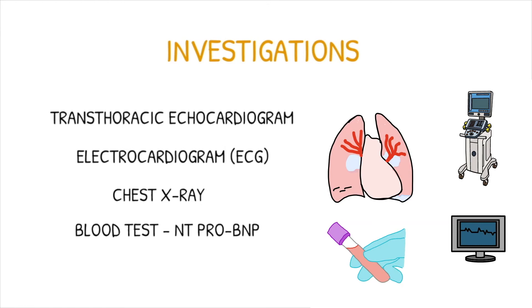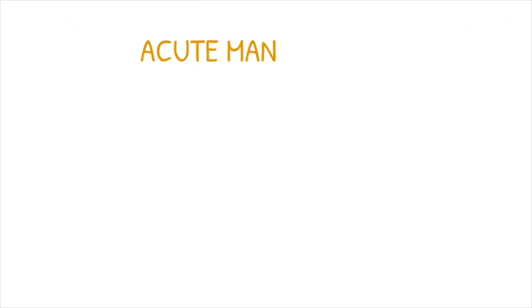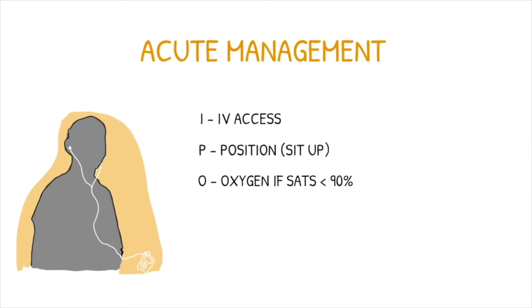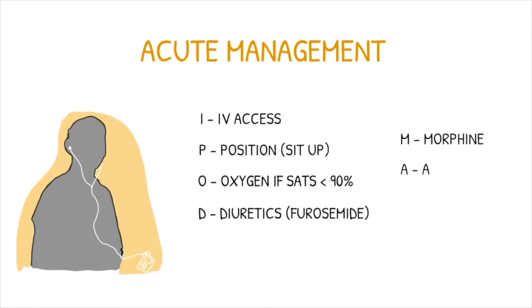For a baseline workup of patients, do a full blood count, liver function tests, and electrolytes. Management for an acute exacerbation or decompensation of heart failure can be remembered by iPodman: gain IV access, positioning by sitting up, high flow oxygen therapy for oxygen saturations less than 90%, a loop diuretic such as furosemide, diamorphine given slowly with an anti-emetic, and nitrates if there is myocardial ischemia or severe hypertension.